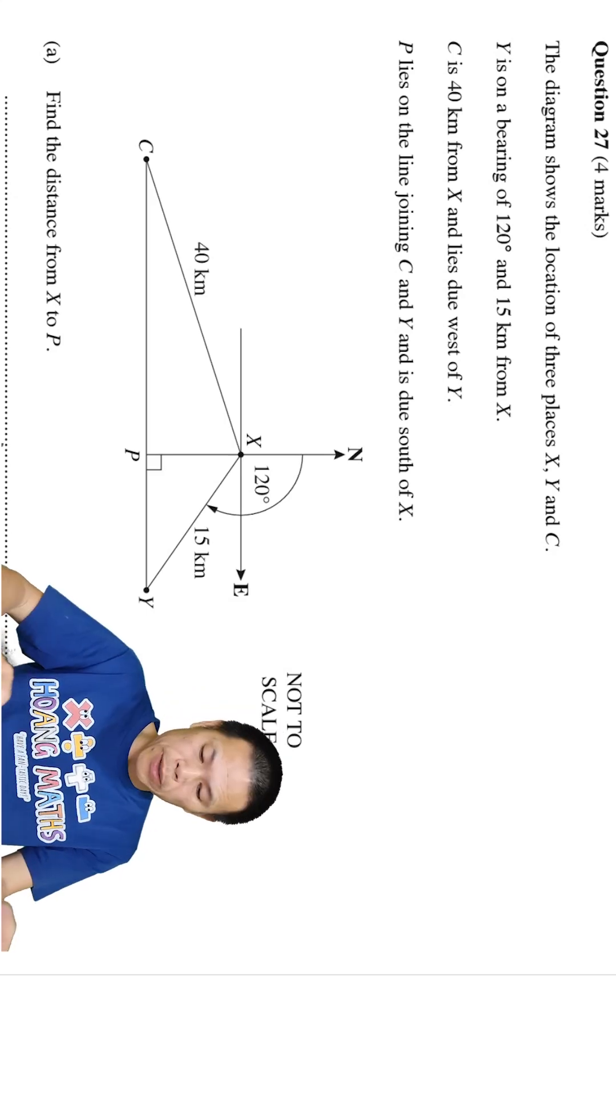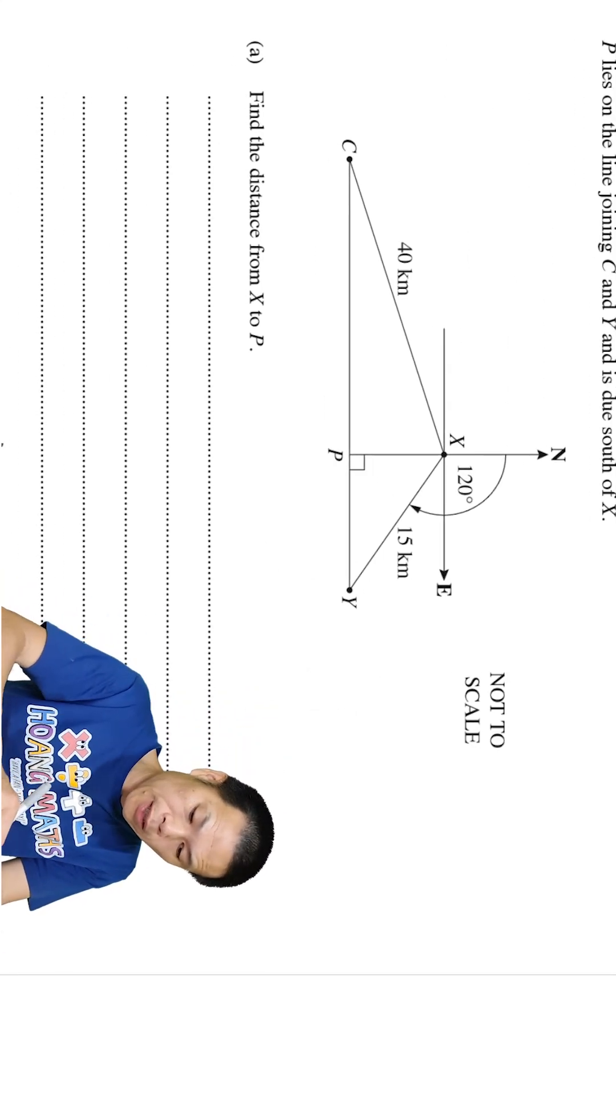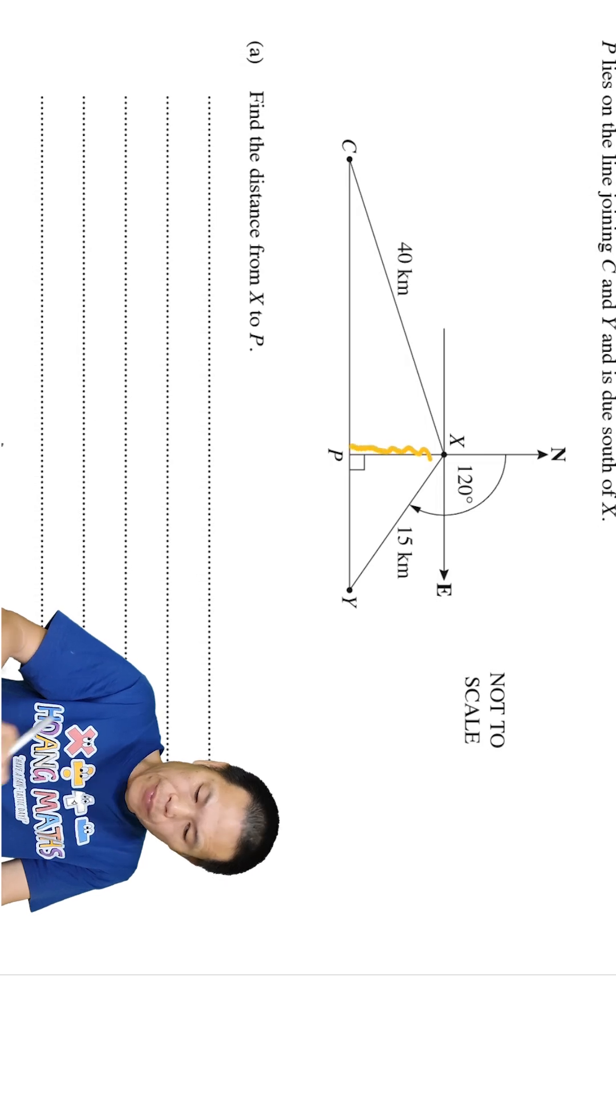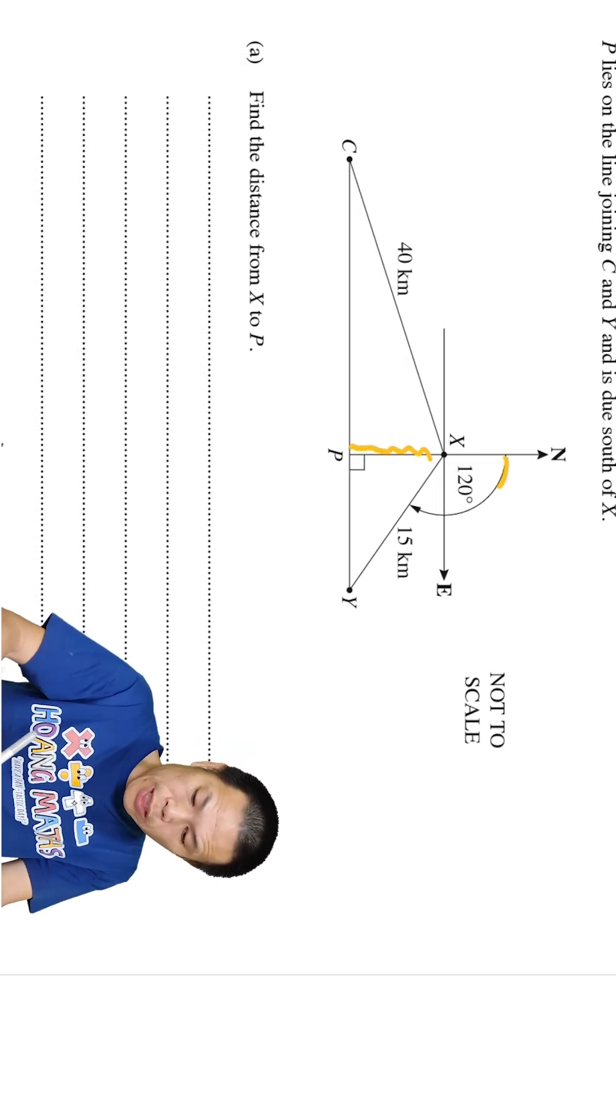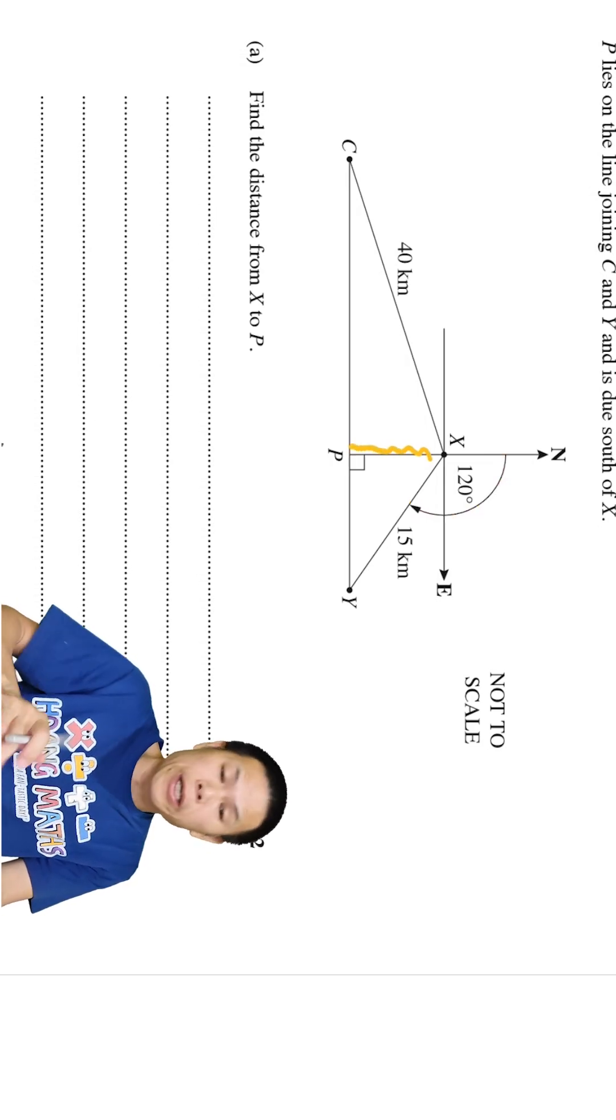Find the distance from x to p. x to p is this length here, and we know that from here to here is 120 degrees.